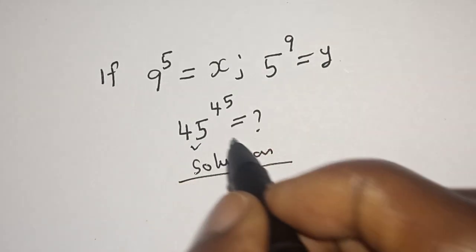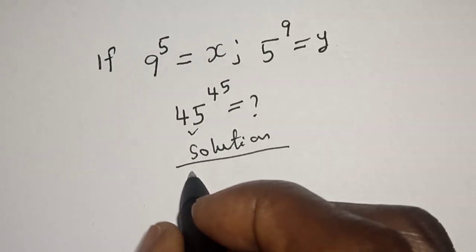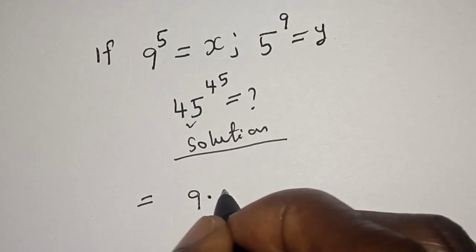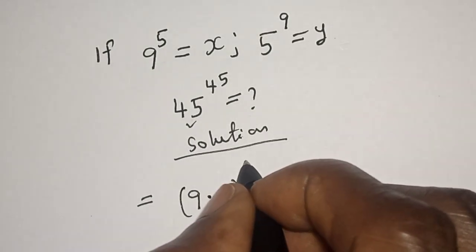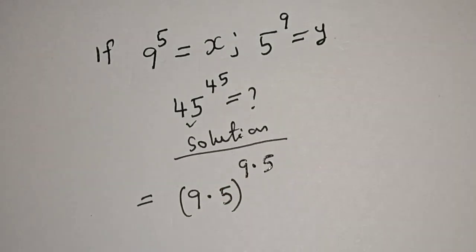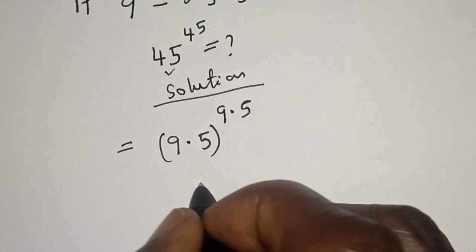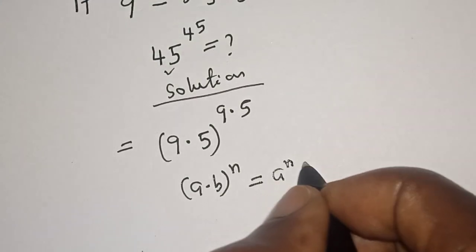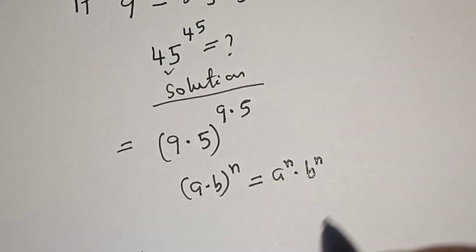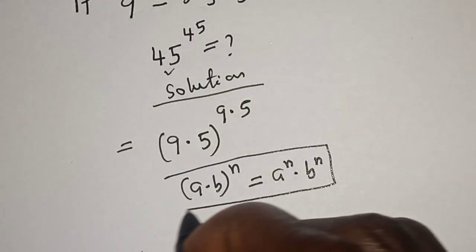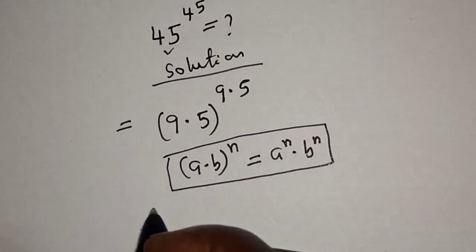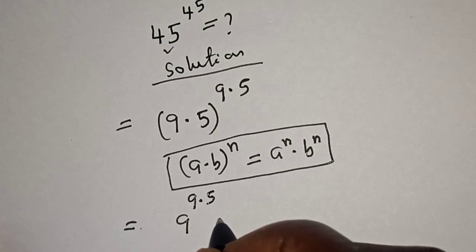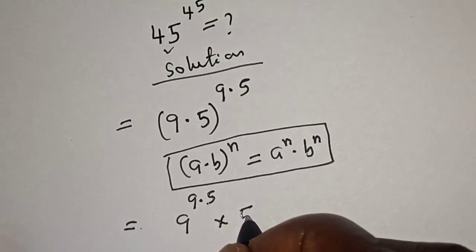Let's start our operation. 45 to the power of 45 can be written as (9 times 5) to the power of (9 times 5). Now take note of this rule: if you have a multiplied by b to the power of n, this is equal to a raised to power n multiplied by b raised to power n.